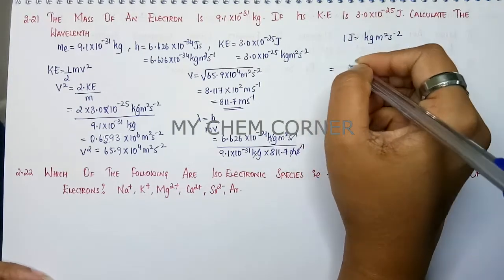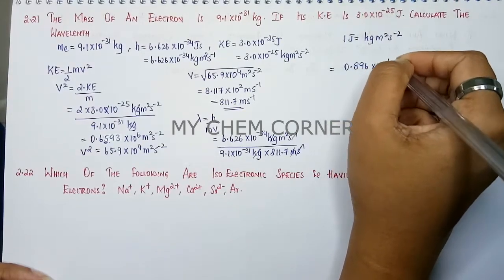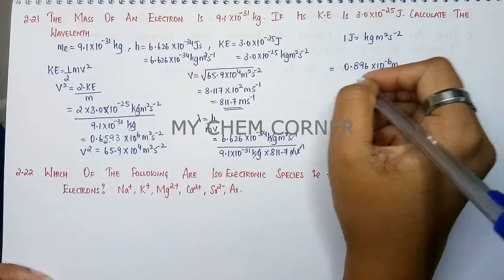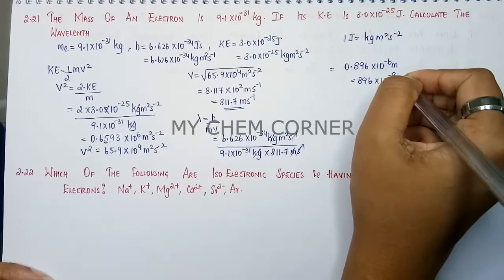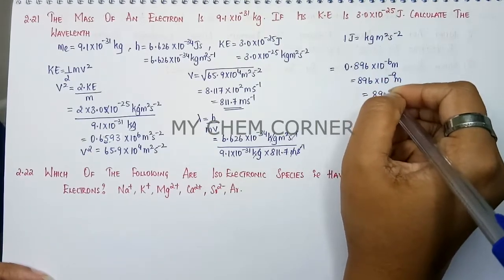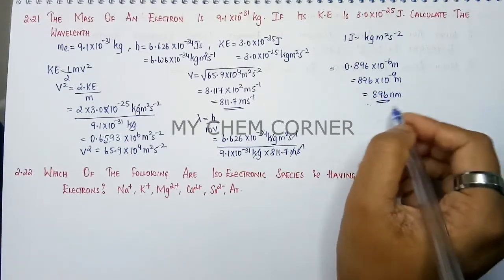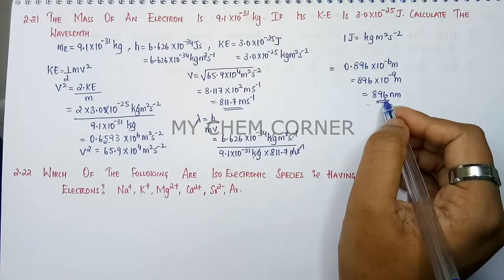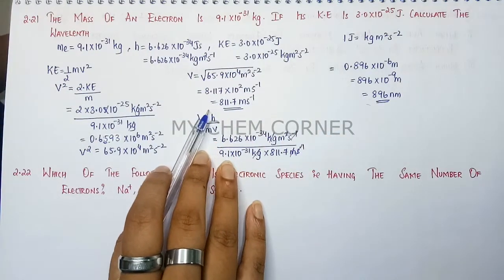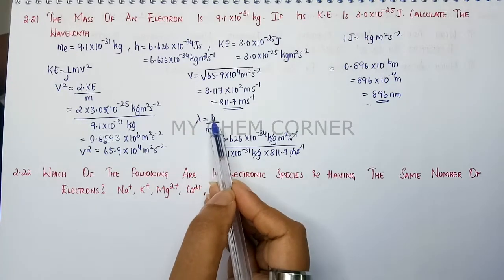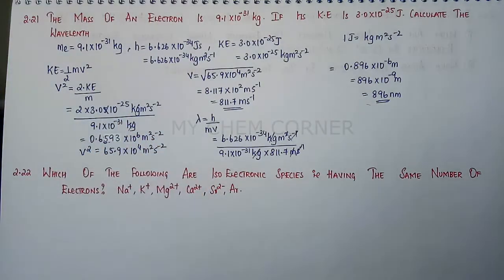Solving gives 0.896 × 10⁻⁶ m. Shifting the decimal to the right: 896 × 10⁻⁹ m, which equals 896 nanometers, since 1 nanometer = 10⁻⁹ m. Therefore, the wavelength of the electron is 896 nm. The key method was using kinetic energy to first find velocity, then applying De Broglie's equation to find the wavelength.